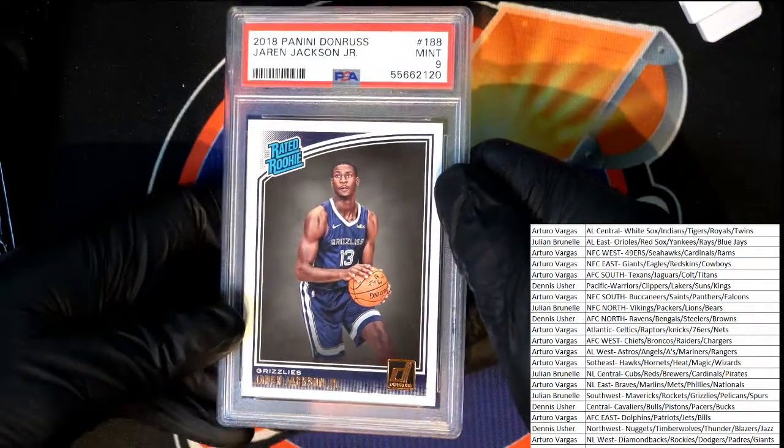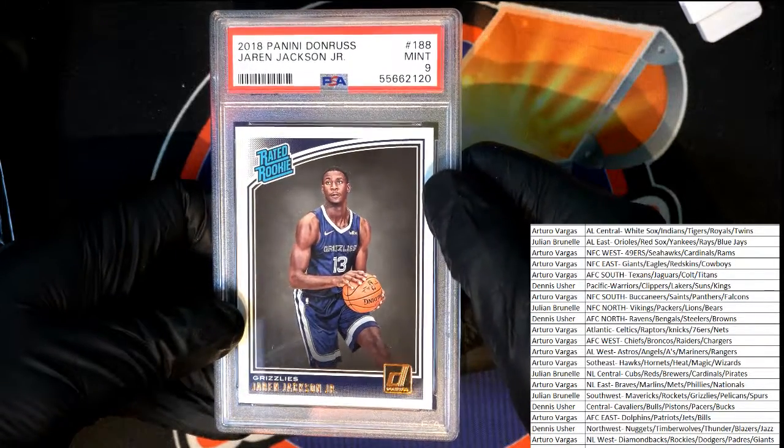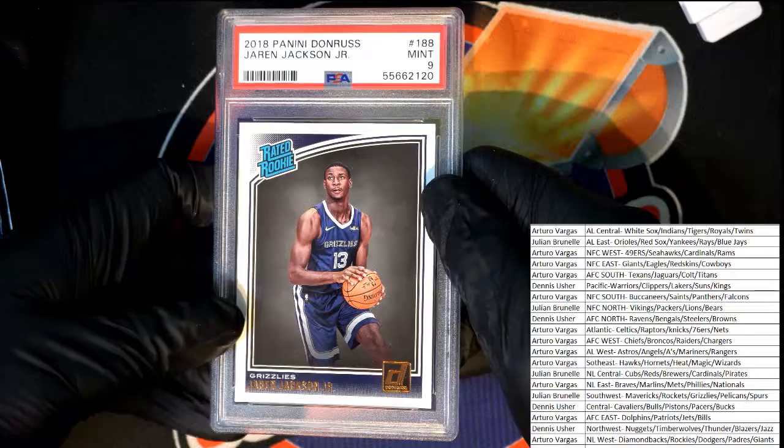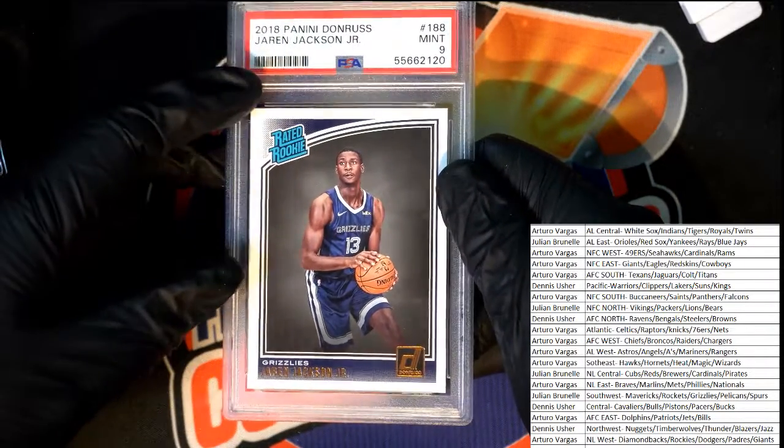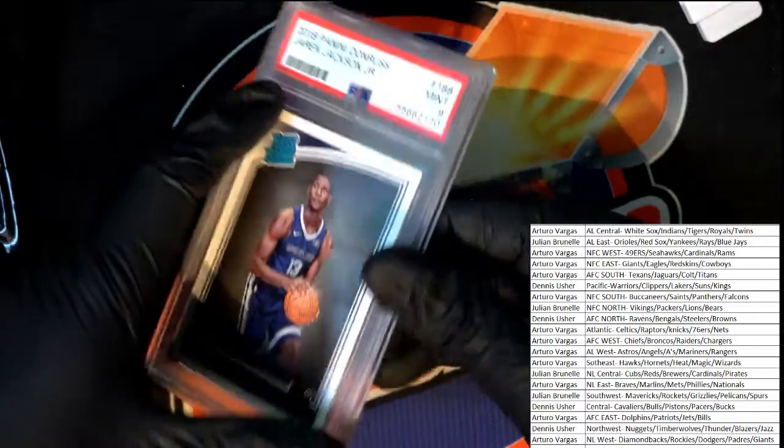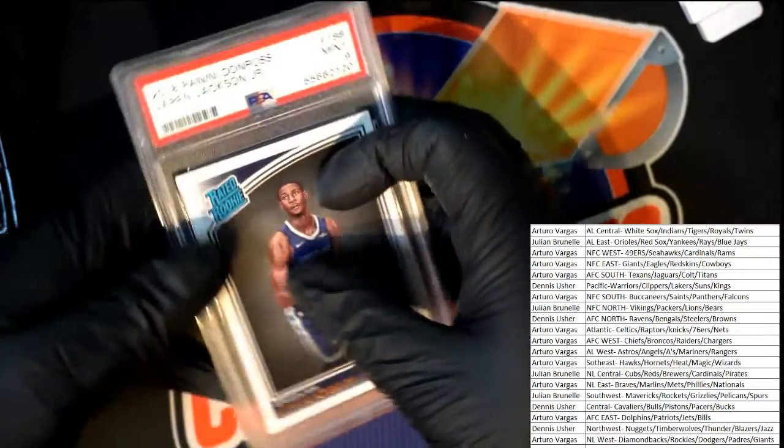Okay, Grizzlies. It's a graded nine, rated rookie card Jaren Jackson Jr. It's a, looks like a parallel. I'm pretty sure that copper color is a parallel. Really nice looking rated rookie card. Graded. Grizzlies.